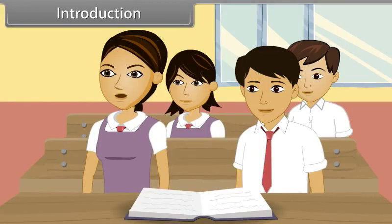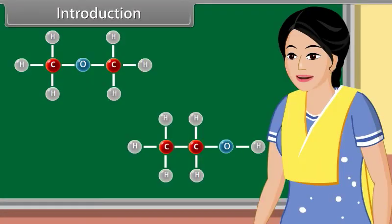A student asks: what is reaction mechanism? Reaction mechanism is a sequence of steps during which chemical reactions occur. In this lesson, you will learn isomers and fundamental concepts in organic reaction mechanisms.